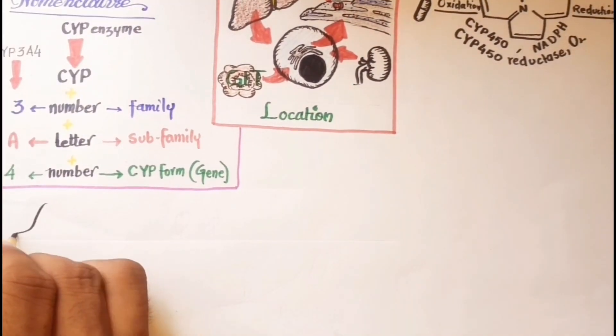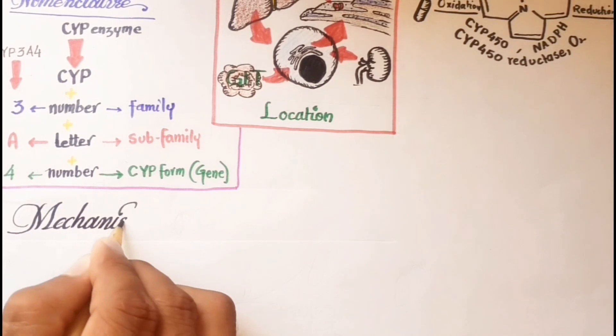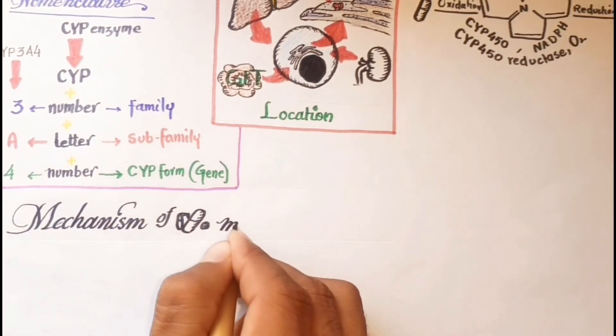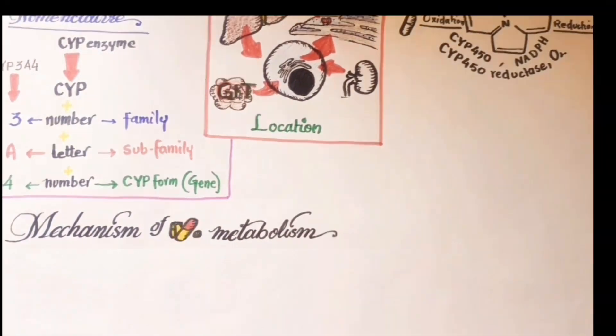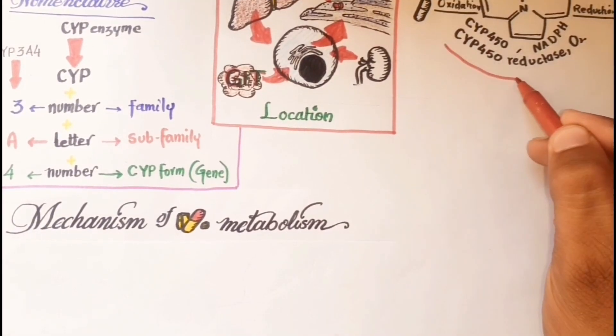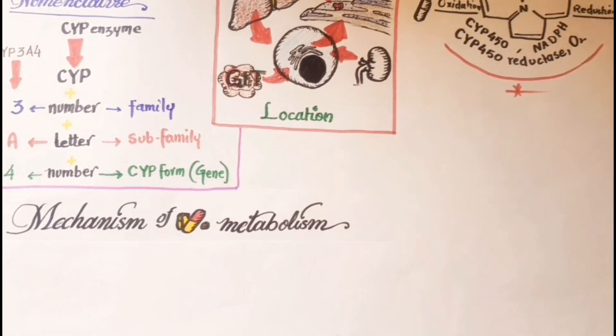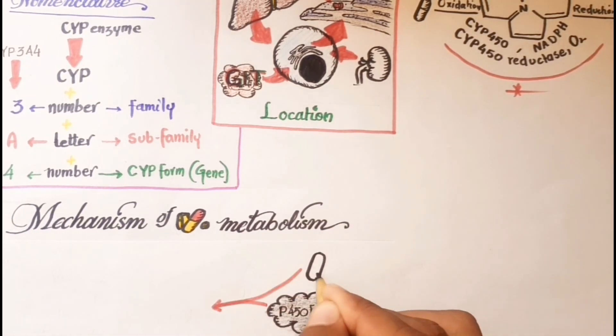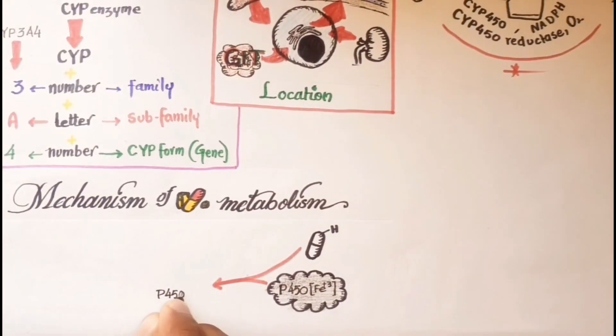CYP3A4 and its mechanism of drug metabolism. These enzymes catalyze reactions that require CYP450, CYP450 reductase, NADPH, and oxygen. First of all, in step 1, CYP450 containing ferric iron combines with a molecule of drug and forms a complex.